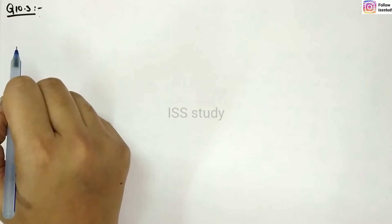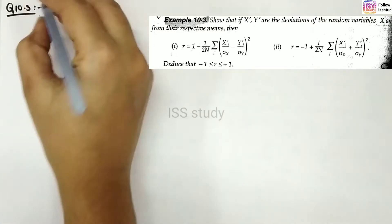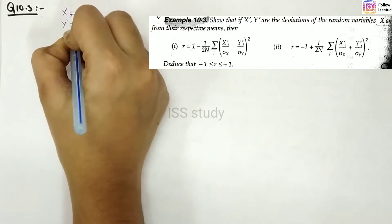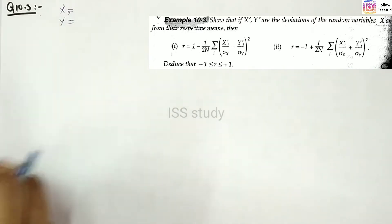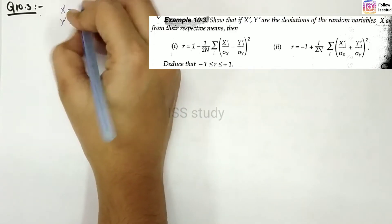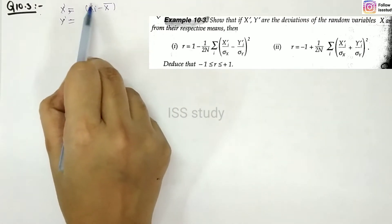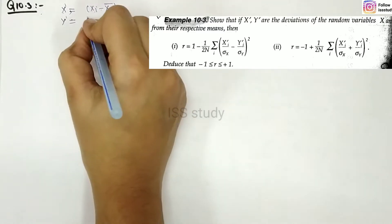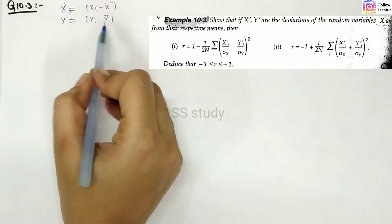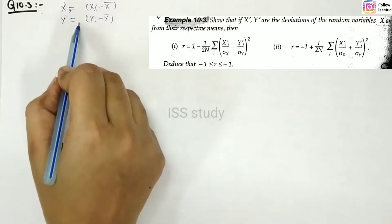What does Example 10.3 say? Show that if x' and y' are the deviations of the random variables x and y from their respective means. So x' is x_i minus x-bar, and y' is y_i minus y-bar. These are the deviations of the random variables from their respective means. When we subtract from the respective means, this is the deviation — written in language form in this question.